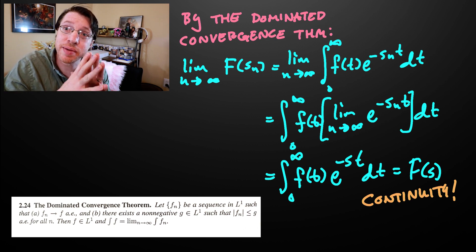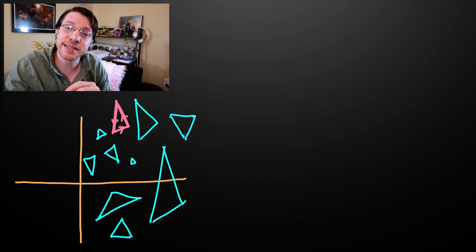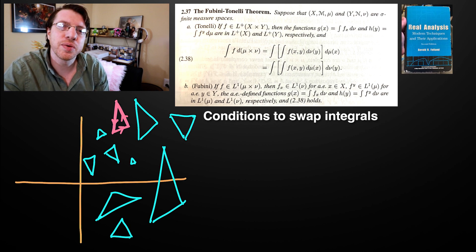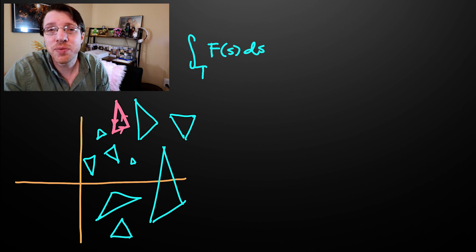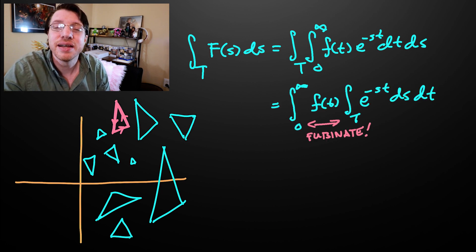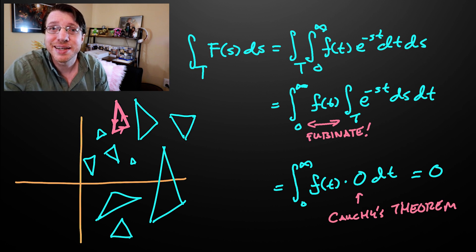Now we have that the Laplace transform is continuous — that's the first requirement to apply Morera's theorem to conclude analyticity. To get analyticity, we take an arbitrary triangle in the right half plane and show the integral along it is zero. This is where we use the Fubini-Tonelli lemma to exchange the integrals. Taking the integral along the triangle of the Laplace transform, we rewrite the Laplace transform as another integral and apply Fubini-Tonelli. Moving the triangle integral inside, we see it applies only to an exponential function, which is entire, so the integral is zero. Therefore the Laplace transform is analytic.